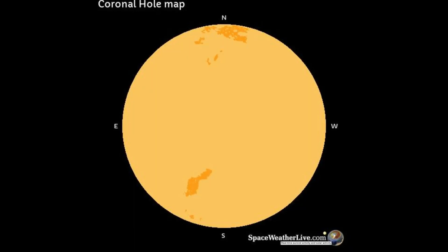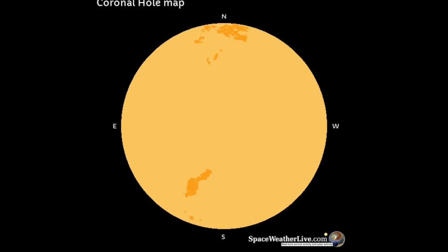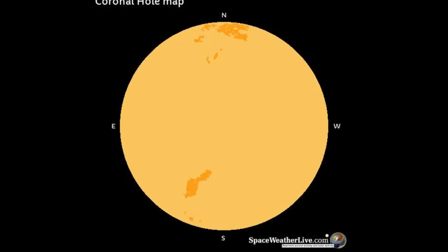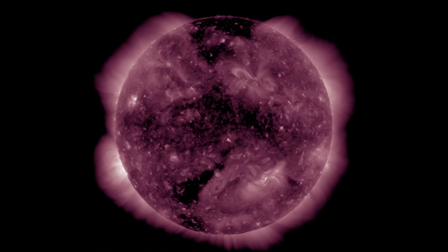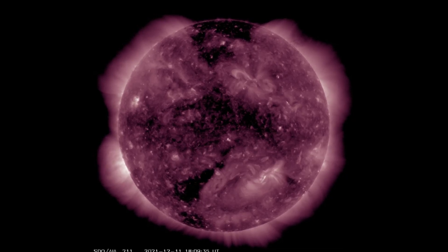On the coronal hole map, there are two formations, one at the polar top and the other rotating to be Earth facing on Sunday. Here they can be observed on the SDO211 filter.